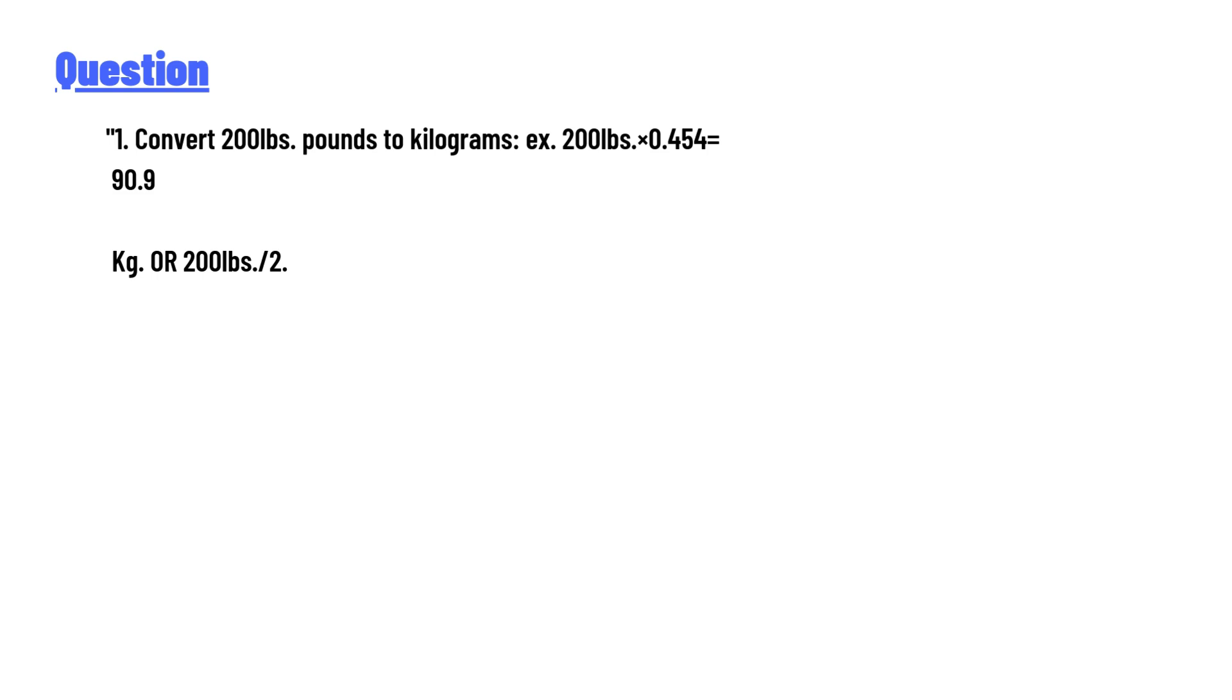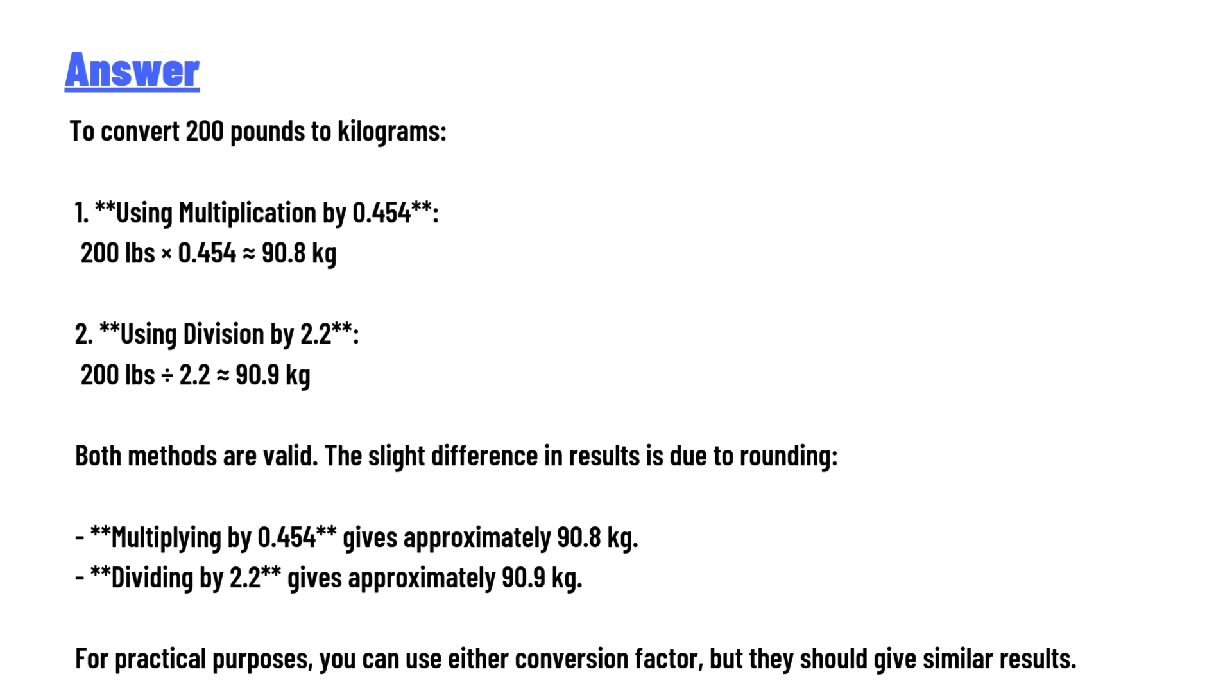The answer to the question is: to convert 200 pounds to kilograms, Method 1 - Using multiplication by 0.454: 200 lbs × 0.454 = 90.8 kg. Method 2 - Using division by 2.2: 200 lbs ÷ 2.2 = 90.9 kg.